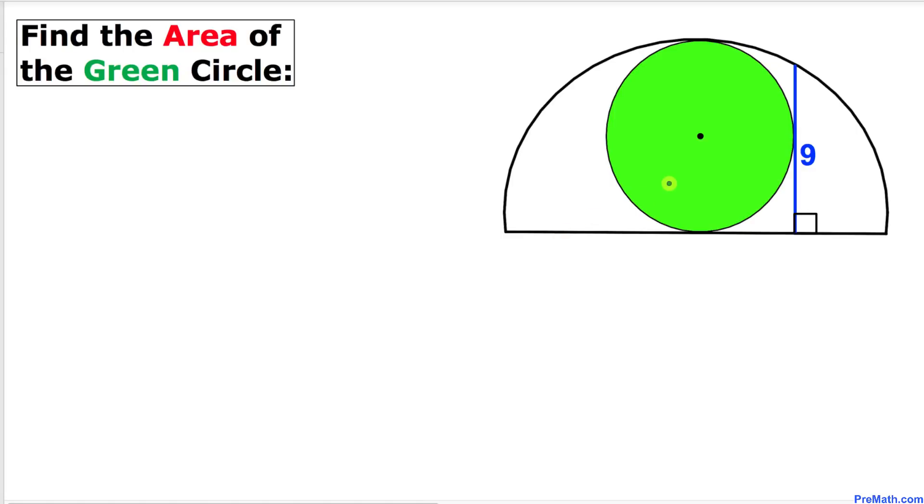Welcome to PreMath. In this video tutorial, we have a green circle that is inscribed in a semicircle, as you can see in this figure. Moreover, this line segment is tangent to this circle and its length is nine units. Now we are going to find the area of this green circle, so let's go ahead and get started with the solution.